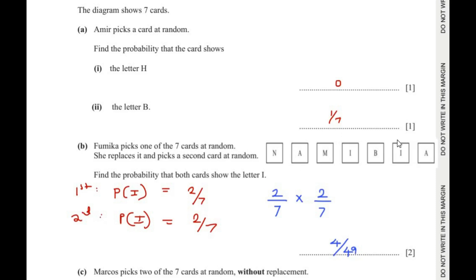In the given cards, I appears twice, so the probability of getting the letter I is 2 out of 7. Since she replaces the card before the second pick, the probability of getting I in the second pick is also 2 out of 7. So the total probability is 2/7 × 2/7 = 4/49.